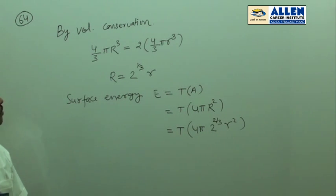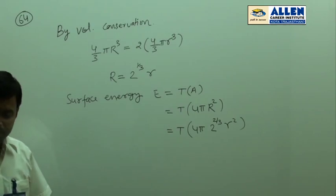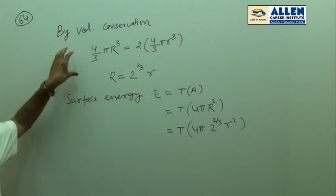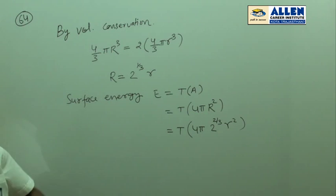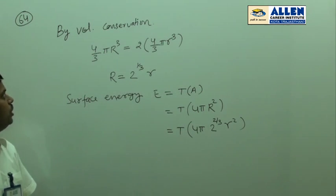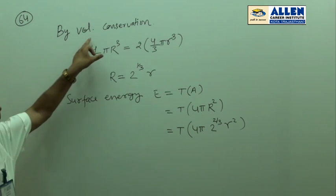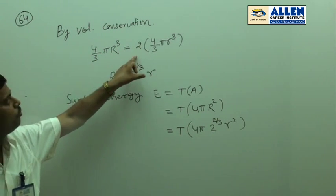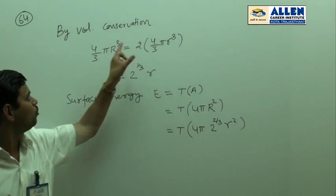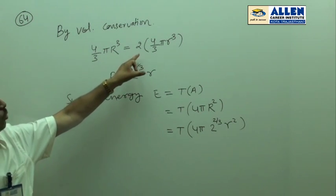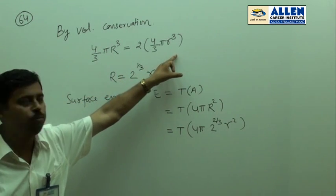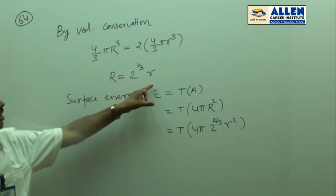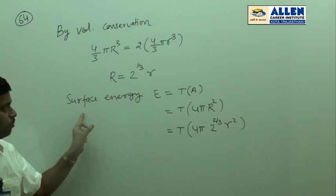Revisiting question number 64 — two small drops of mercury are merged to form a large drop and the surface energy of the large drop is required. Applying volume conservation, the volume of the large drop equals the volume of two small drops: 4 upon 3 pi R cube equals twice 4 upon 3 pi r cube, so capital R equals 2 to the power 1 by 3 times r.